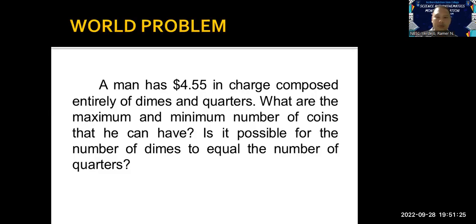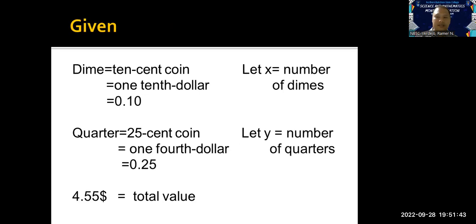This is my sample word problem: a man has $4.55 in change composed entirely of dimes and quarters. What are the maximum and minimum number of coins that he can have? Is it possible for the number of dimes to equal the number of quarters? So let's identify the given first. The word 'dime' means a 10-cent coin, that also means one-tenth dollar, so we can represent a dime as 0.10. We let x be the number of dimes.